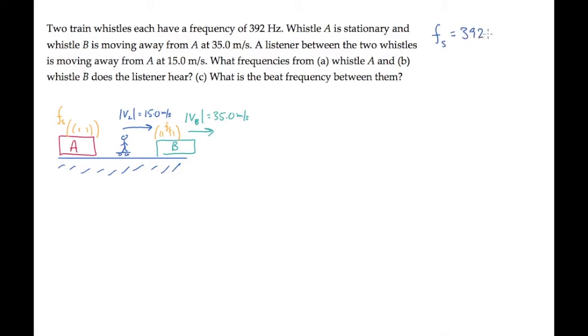In parts A and B, we're asked to find the frequency that's heard by the listener. That's given by the Doppler shift equation: fL equals the speed of sound V plus the velocity of the listener, divided by the speed of sound V plus the velocity of the source, all multiplied by the source frequency.